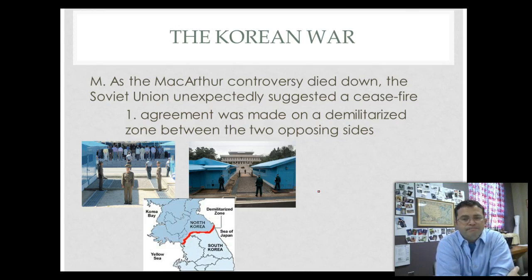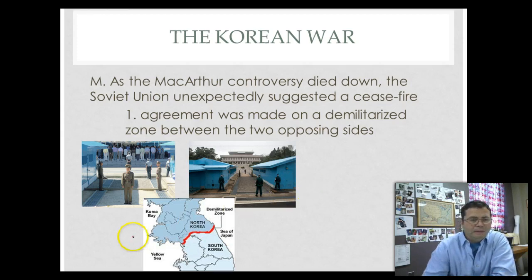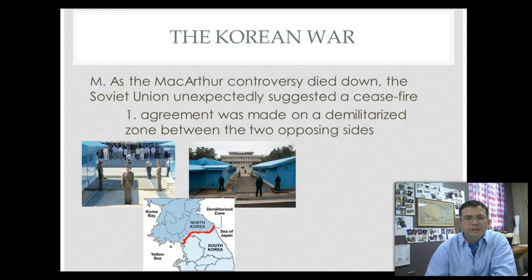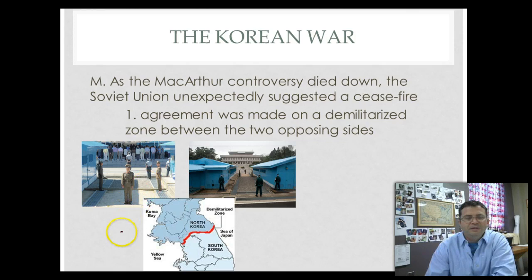Here we see photos of the 38th parallel — it still looks like this today in terms of military presence. The picture on the left is from North Korea looking south; the picture on the right is from South Korea looking north. A demilitarized zone was established — oddly enough suggested by the Soviet Union — to cease fire in the Korean conflict and create a zone where no military can be placed along the border. It's still there today, still very much a hotbed. Interestingly, if you watch YouTube videos, you can see North Korean soldiers taking photographs of themselves in the demilitarized zone.